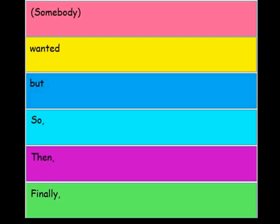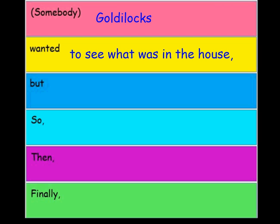We are going to pretend we just read Goldilocks and the Three Bears. Students identify that the main character is Goldilocks, and you will write that in the first box. Goldilocks wanted to see what was in the house. But no one was home.